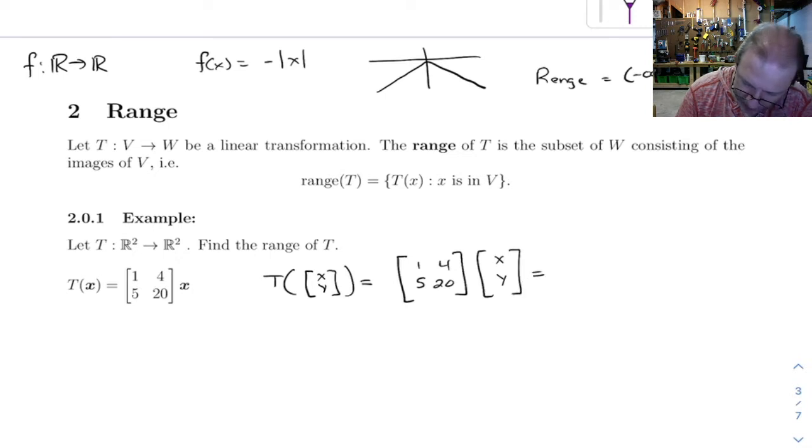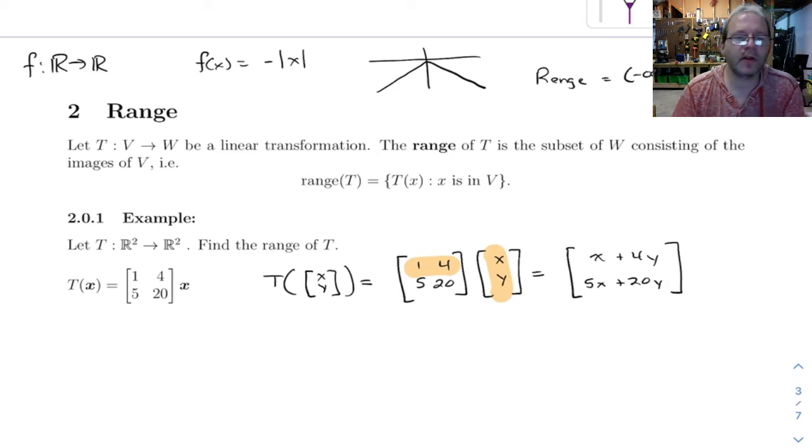And if you take this and multiply it by xy, what you wind up getting is, for this you get 1x plus 4y, and then when you do the bottom you get 5x plus 20y. Okay, so those are all the images that you get. You stick in xy, it spits out x plus 4y and 5x plus 20y.